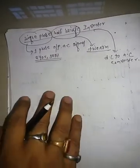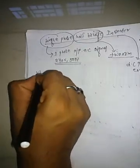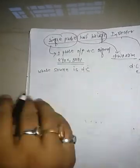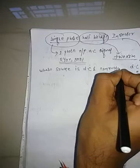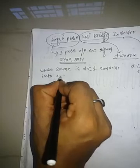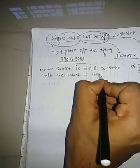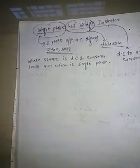So, what is a single phase half bridge inverter? Its source is DC and it converts into AC, which is single phase. This is the single phase half bridge inverter circuit.